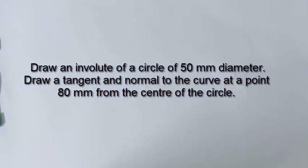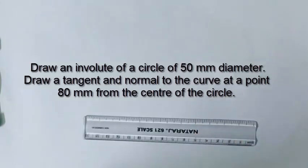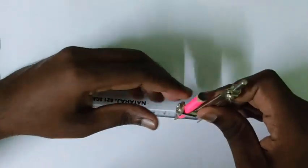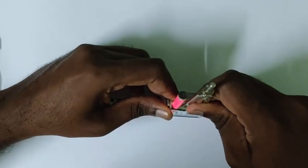Welcome guys, as given in the question we have to draw the involute of a circle. To start that let us draw a circle with a given diameter of 50 mm so the radius will be 25 mm.